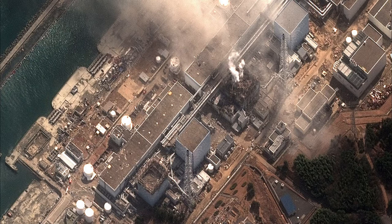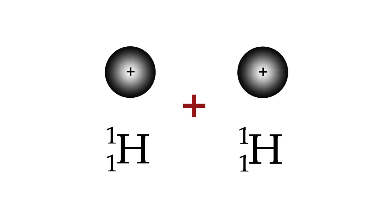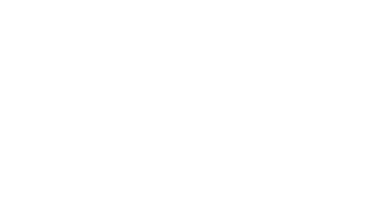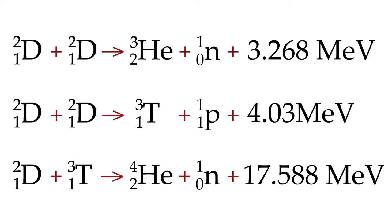So in a nuclear fusion reaction, you could combine two hydrogens, or you could combine a deuterium and a tritium, or two deuteriums, but these reactions are differently productive of energy.